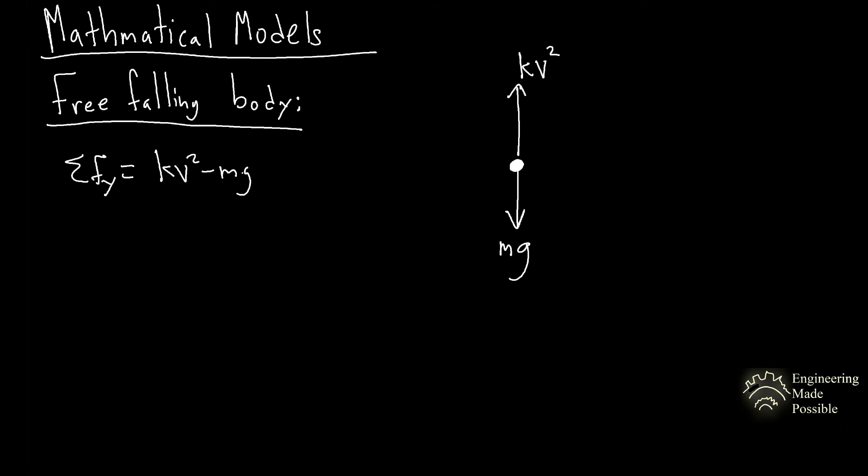And this will be equal to the mass of the body that we're analyzing and its respective acceleration. So we have k times v squared, take away mg, is equal to m. And another way of writing acceleration is the rate of change of velocity, or dv dt. So this would be your differential equation.